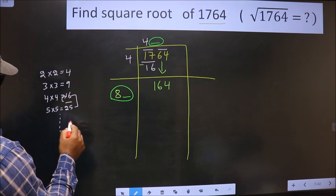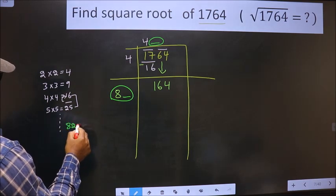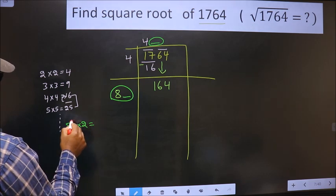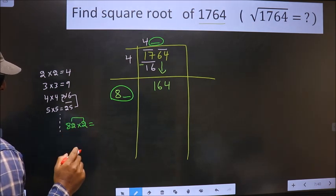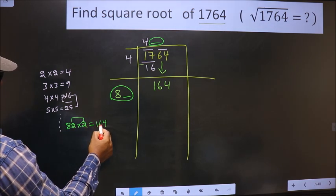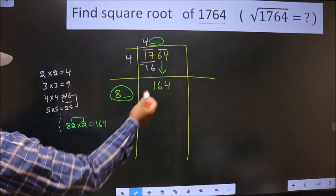If I take 2 here, 82 into, here also it should be 2. These two numbers have to be same. So 2 into 2, 4. 2 into 8, 16. Yeah, we got exact 164.